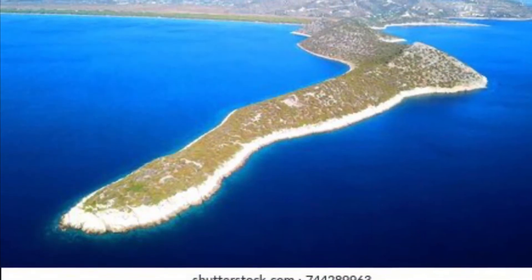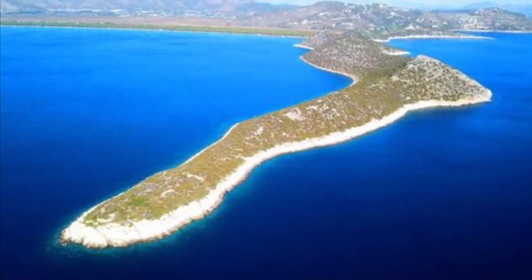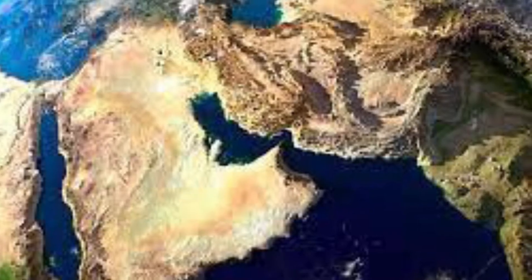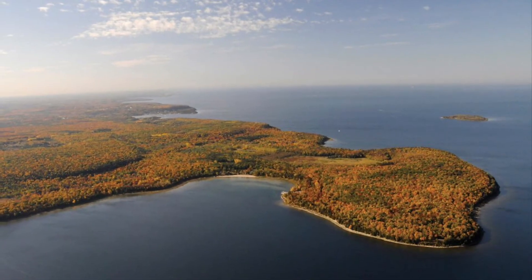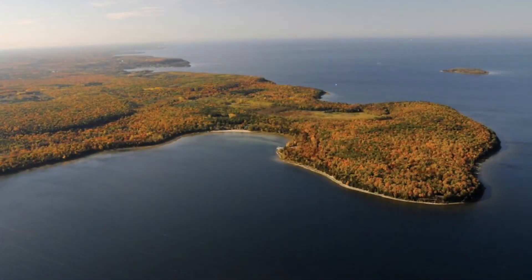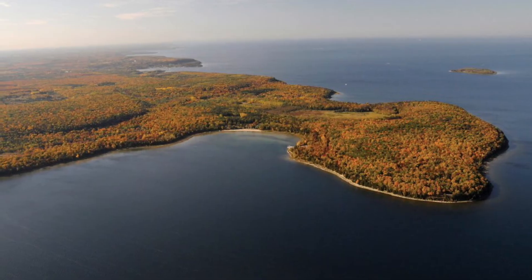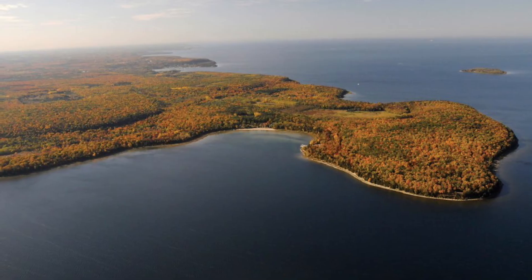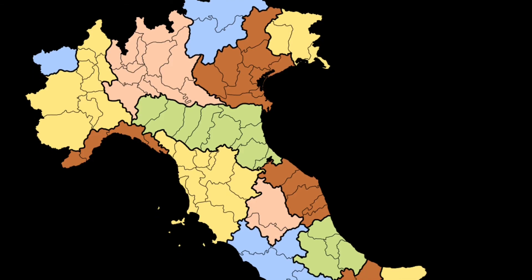The definition of a peninsula is a piece of land almost surrounded by water, or projecting out into a body of water. Here are some photos of peninsulas. To give a more thorough example, peninsulas are a landform which is surrounded by water on three sides and attached to a larger piece of land. A fun fact is that peninsula means almost an island in Latin.